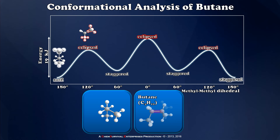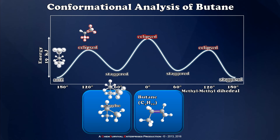My next 60 degree bond rotation leads me to another staggered conformer. But in this staggered conformer, the methyl groups are getting very close to one another. So when we have a situation like this where our bond conformation is staggered but the largest groups are adjacent to one another, we call this a gauche conformation, and it's slightly higher in energy than an anti.